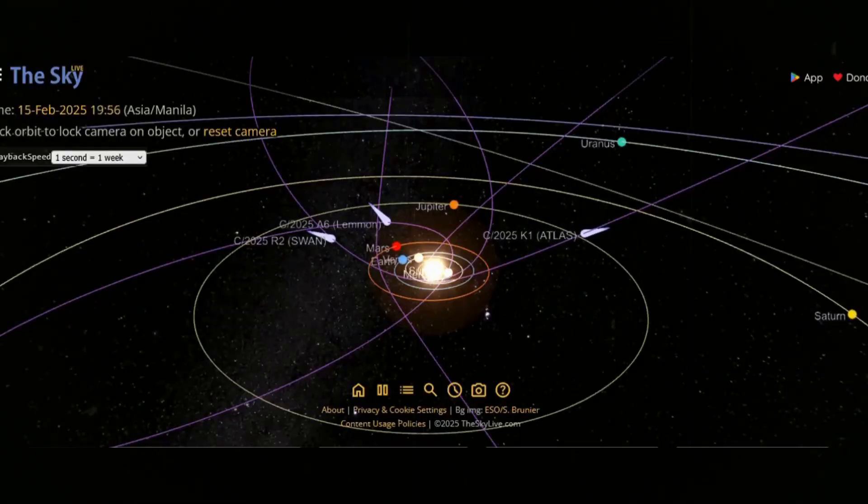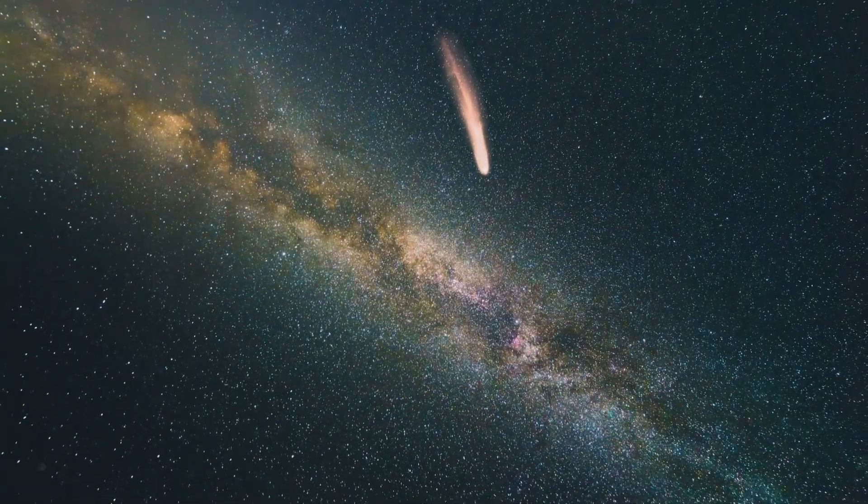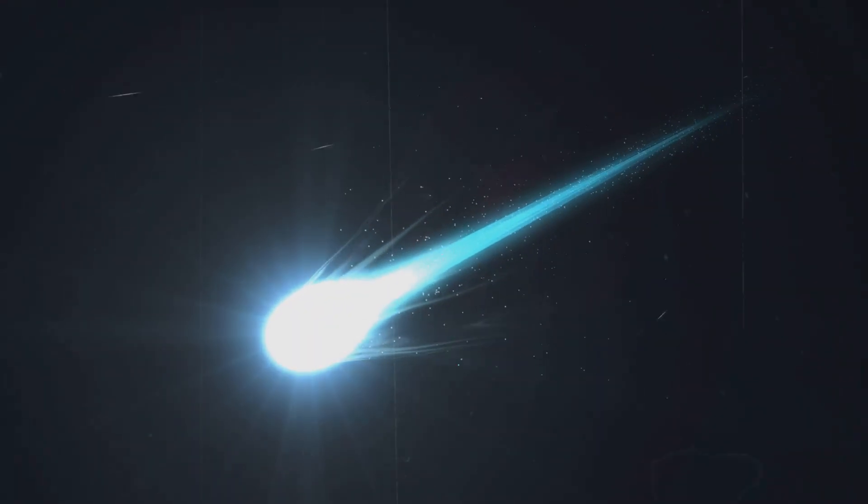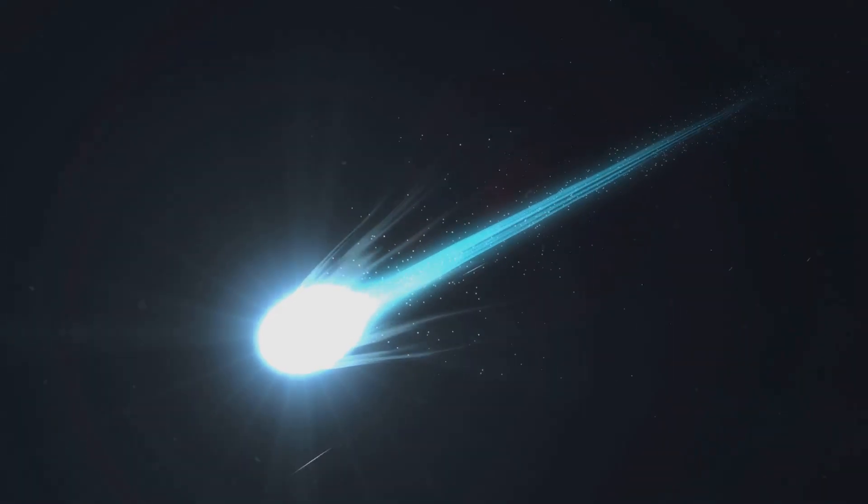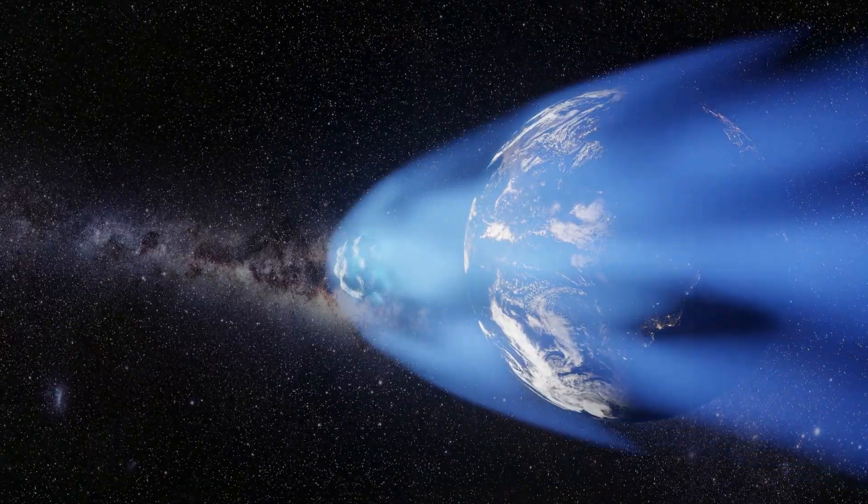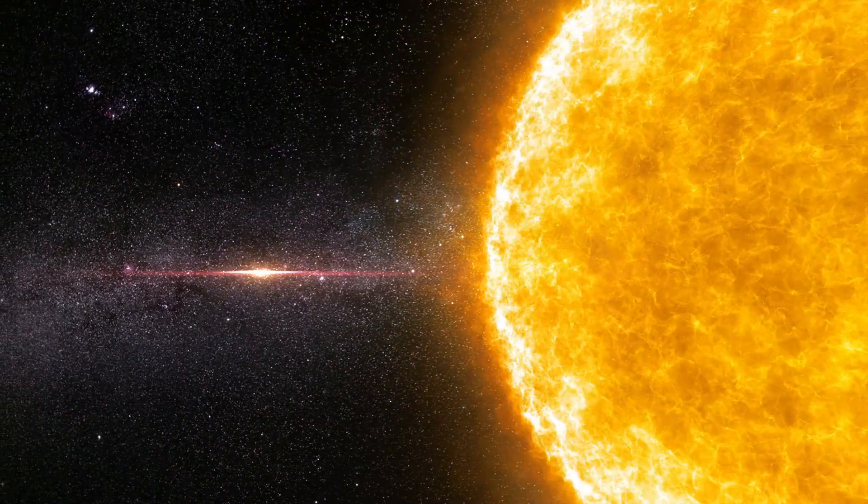Consider what happens when a comet approaches the Sun. Its frozen nucleus awakens as heat pours in. Gases boil off and dust is released in torrents, creating an expanding envelope that glows under sunlight. Some of this gas is quickly ionized, stripped of electrons by solar ultraviolet radiation.